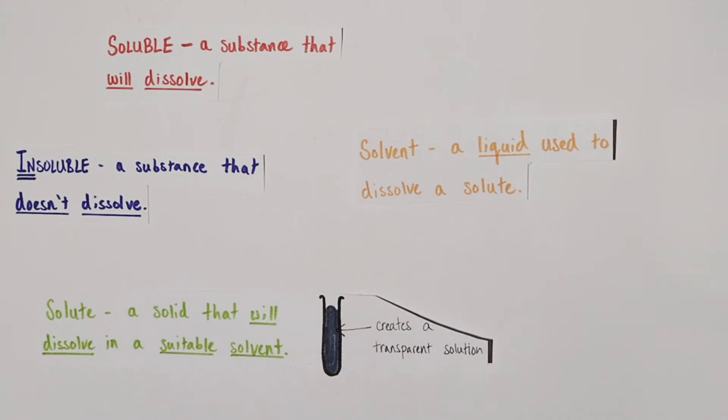And so of course we also cover the term solvent. A solvent is a liquid used to dissolve a particular solute. A good example would be water being a solvent and sugar being a solute dissolving in the water.